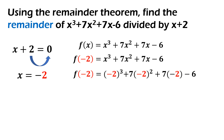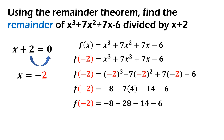Negative 2 raised to 3 — that's negative 2 times negative 2 times negative 2 — is equal to negative 8. Negative 2 squared will be equal to positive 4. Then, 7 times negative 2 is 14. Copy yung minus 6. Next step is to solve 7 times 4, so that will give us 28. Negative 8 plus 28 will give us 20. Then, negative 14 minus 6 will give us negative 20. 20 minus 20 will be equal to 0.